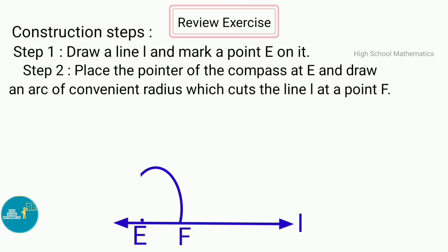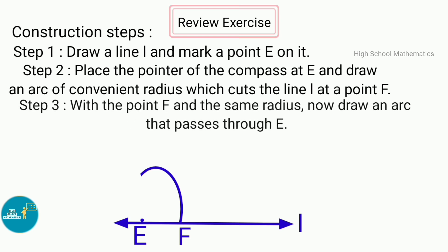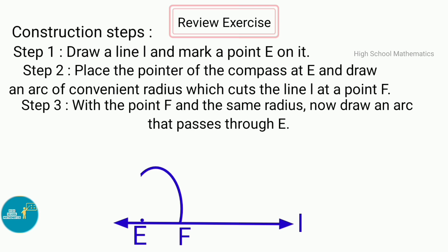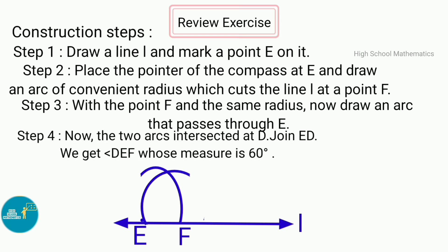Step 3 — with point F and the same radius, draw an arc that passes through E. Step 4 — the two arcs intersect at D. Join ED. We get angle DEF whose measure is 60 degrees.